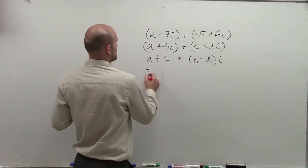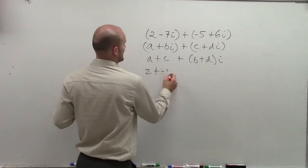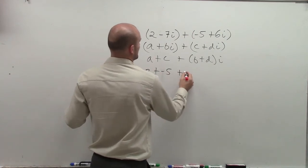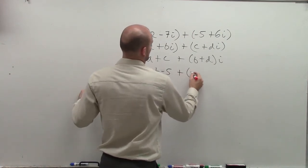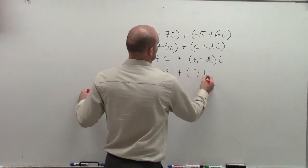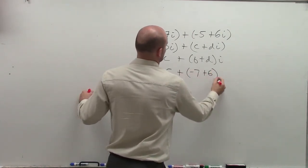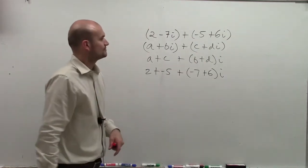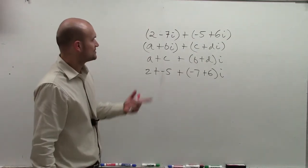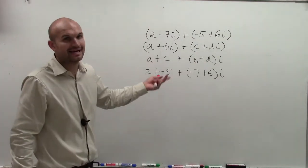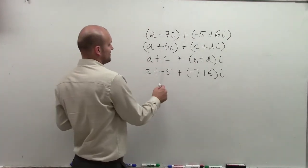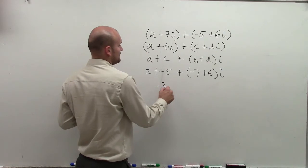I can just take 2 plus negative 5, plus negative 7 plus 6i. You can only add terms that are like.